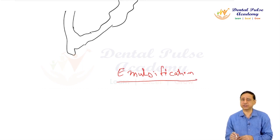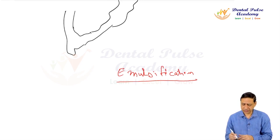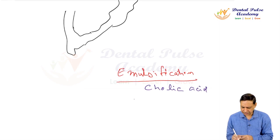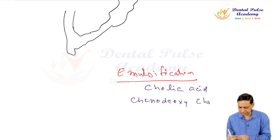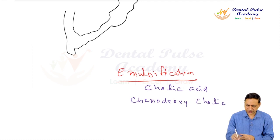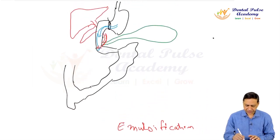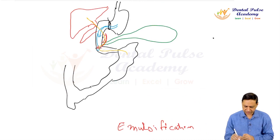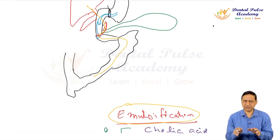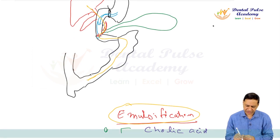Emulsification of fat is because of bile acids present in bile juice. The bile acids are cholic acid and chenodeoxycholic acid — these are primary bile acids. These are secreted from the liver, come into the intestine, emulsify, help digest, and absorb fat. From the terminal ileum, these bile acids are absorbed.